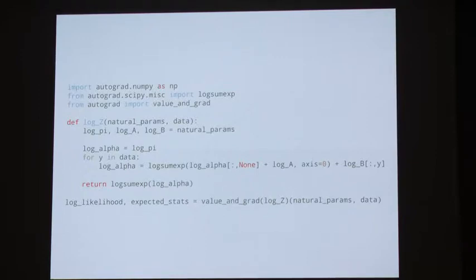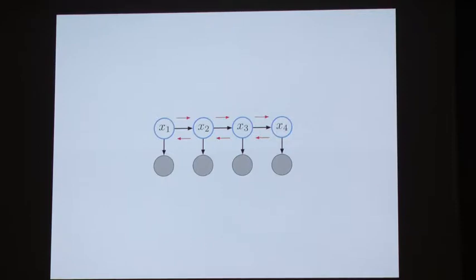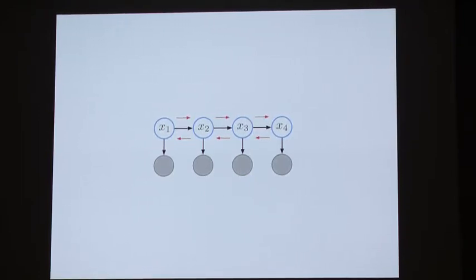This line at the very end shows how to compute the log likelihood and the expected sufficient statistics for an HMM that you can then use in your EM algorithm. We only had to pass messages in one direction to compute the log normalizer, with no bookkeeping. When we apply our autodiff software and it does backpropagation, we've written the forward pass of messages, and the backward pass of reverse-mode autodiff actually does the reverse pass of messages and turns those messages into expected sufficient statistics for us.